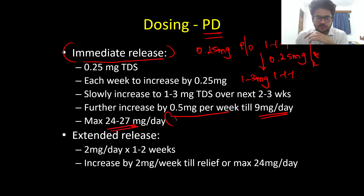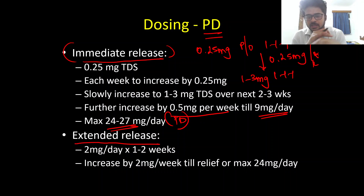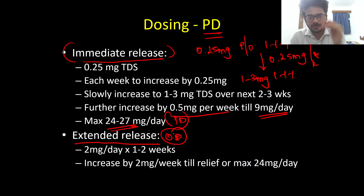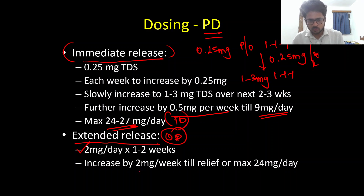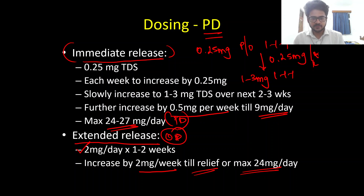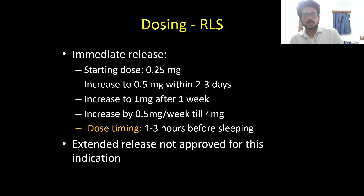For the extended release formulation, the advantage is once-daily dosing — you only need to give it once a day, compared to three times a day for immediate release. We start at 2 mg per day and increase by 2 mg per week over one to two weeks until we reach the desired clinical effect or a maximum dose of 24 mg per day. The maximum dosage is more or less the same as for the immediate release.